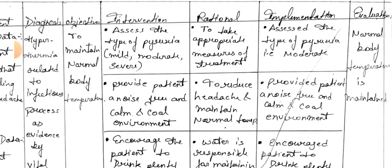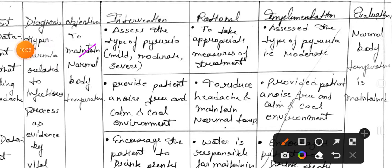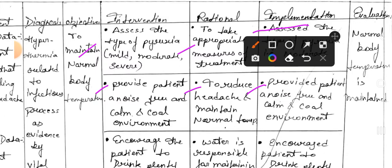First intervention: assess the type of pyrexia — mild, moderate, or severe — to take appropriate measures for treatment. Implementation: assess the type of pyrexia; it is moderate. Second intervention: provide the patient a noise-free, calm, and cool environment. Rational: to reduce headache and maintain normal temperature. Implementation: provide patient a noise-free, calm, and cool environment.